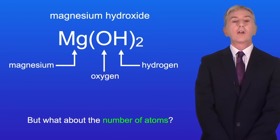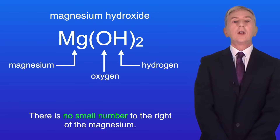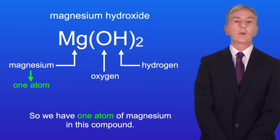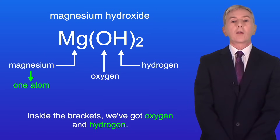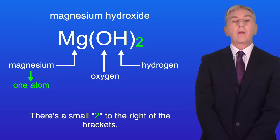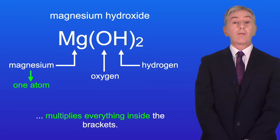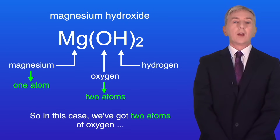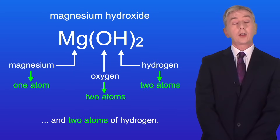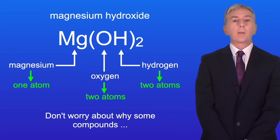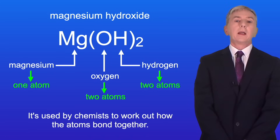But what about the number of atoms? There's no small number to the right of the magnesium, so we have one atom of magnesium. Inside the brackets we've got oxygen and hydrogen, and there's a small two to the right of the brackets. A number to the right of brackets multiplies everything inside the brackets, so in this case we've got two atoms of oxygen and two atoms of hydrogen. Don't worry about why some compounds have brackets — it's used by chemists to work out how the atoms bond together.